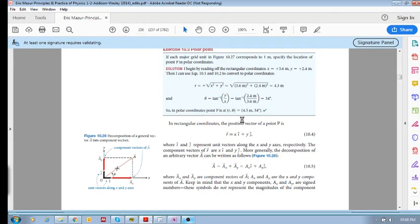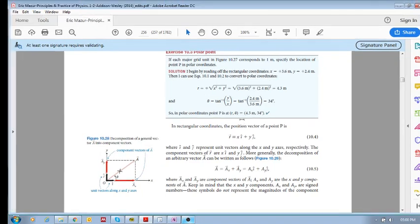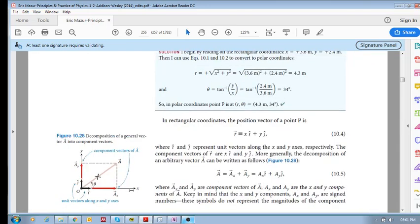You can represent your position vector as x i plus y j, where x is the value of your x component and i is our unit vector in the i direction. There you've got a magnitude and your vector. Then this is the y component: y is the scalar value times the j unit vector, which is the unit vector along the y axis.